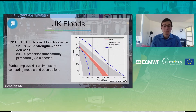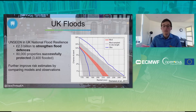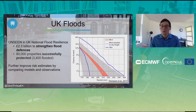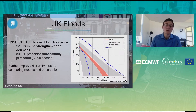What can we learn from UNSEEN for UK floods? This example has already been applied within the UK National Flood Resilience review. A graph from Thompson et al. 2017 shows the application of this method: blue lines show uncertainty estimates for extreme events based on observations — very large uncertainty — whereas in red the model uncertainty is much smaller. Therefore you have an improved risk estimate with which you can strengthen flood defenses and protect properties. We can further improve these estimates by comparing different models and different observational estimates.